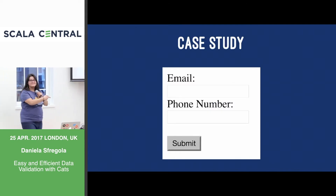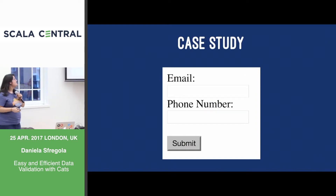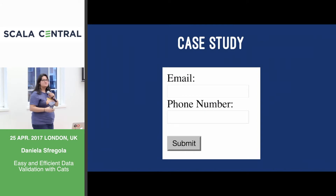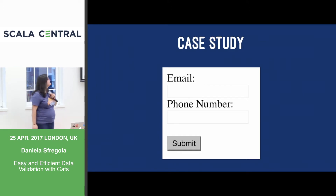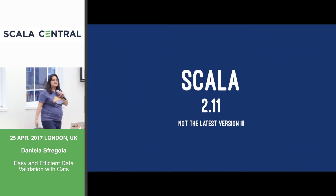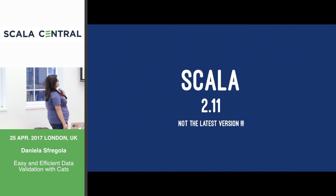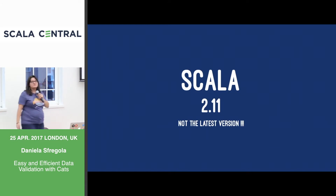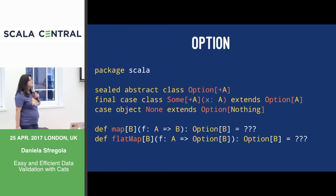Let's write some code. I have this beautiful form that gets an email and a phone number, and I have to submit it. So let's start our journey. We're using Scala 2.11 — we just started, we're not the cool kids yet, but 2.11 will work for us. And we start with Option.